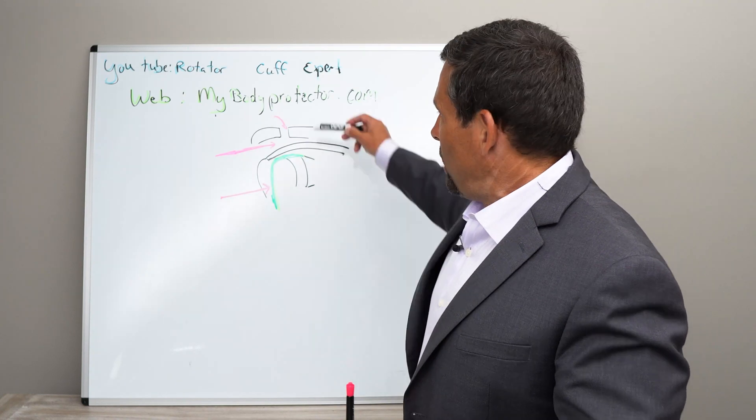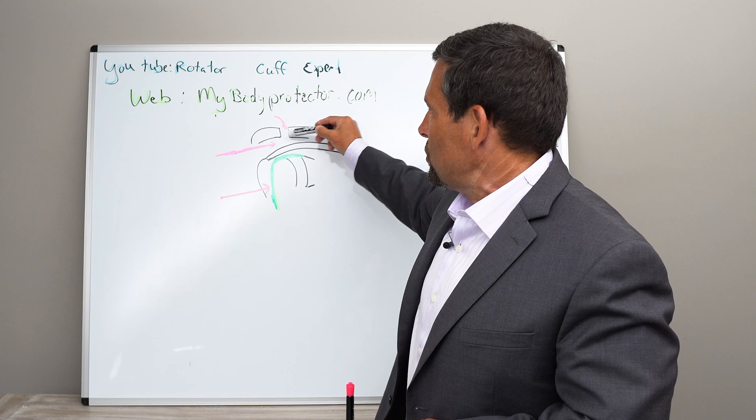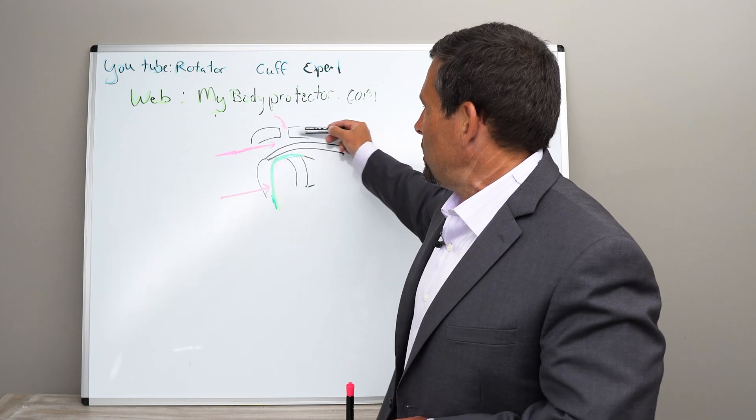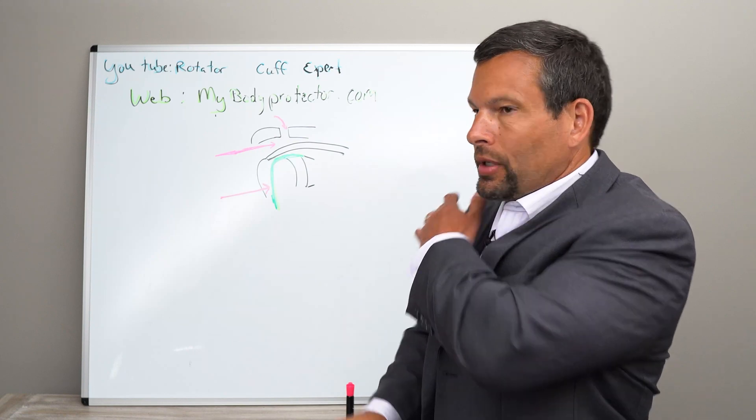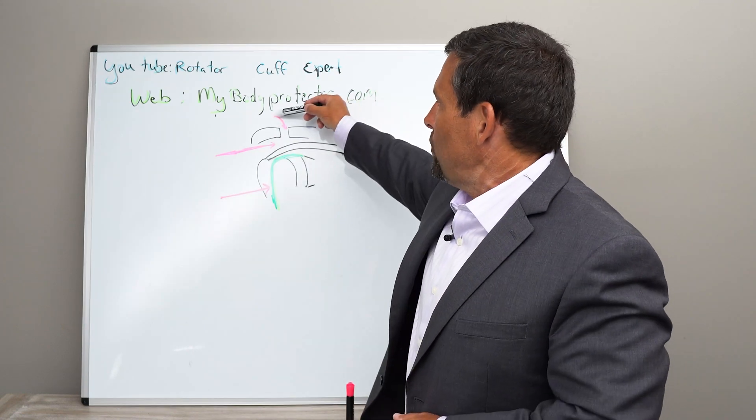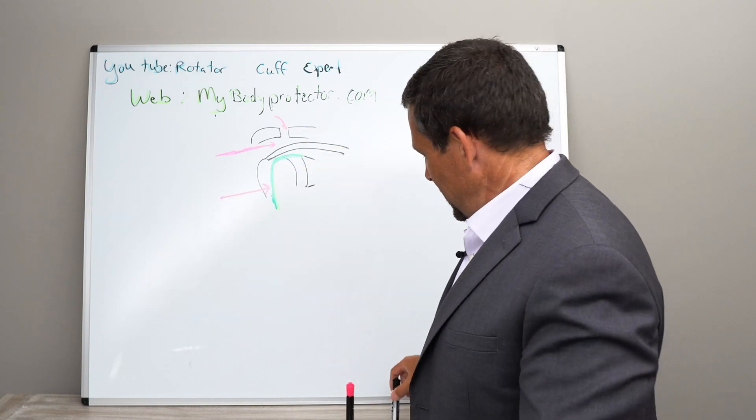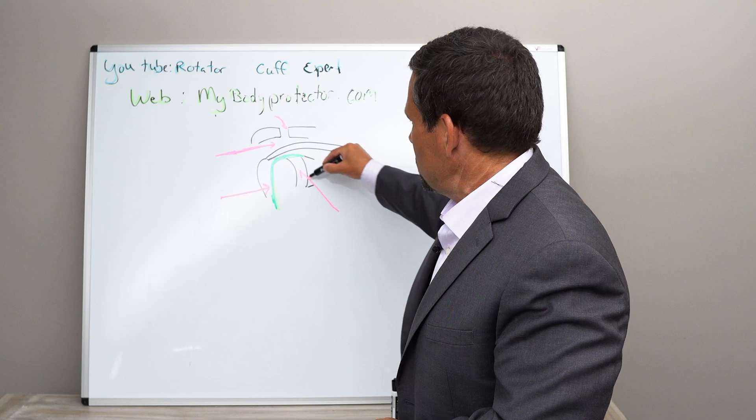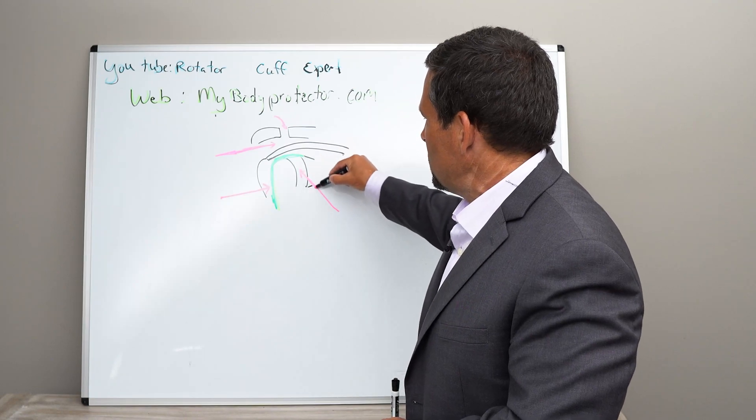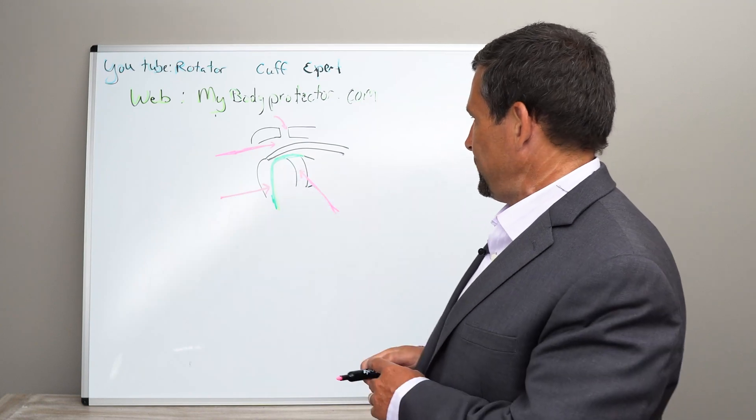And then we also can inject up here on top. So this is the AC joint. This is the acromion. This is the clavicle or the collarbone here. And so sometimes we get pain on top of the shoulder, irritation of that joint, and we can inject that with steroid as well. And one more I didn't mention, if we have arthritis in the joint, we can actually inject the joint itself, the glenohumeral joint.